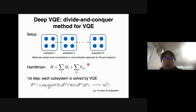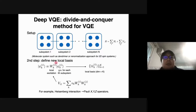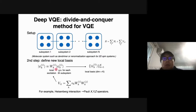The first step of DeepVQE is that each subsystem is solved by using conventional VQE to get the ground state of the subsystem. The next step is to define new local basis: starting from the ground state obtained in the previous VQE, if you apply local excitations on this ground state, you can span a local subspace which we call the local basis. If you choose K local excitations, you can span a K-dimensional subsystem used to expand this subsystem.